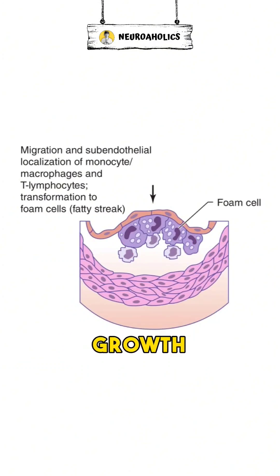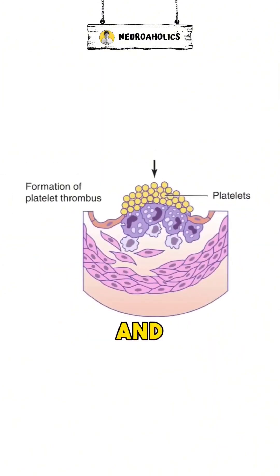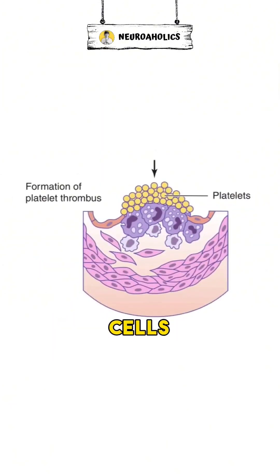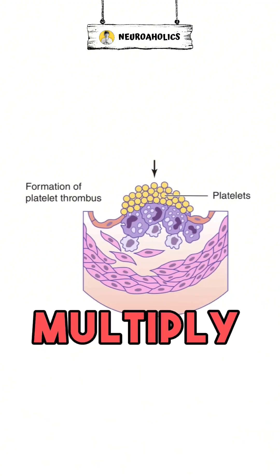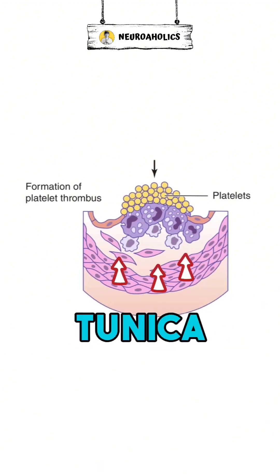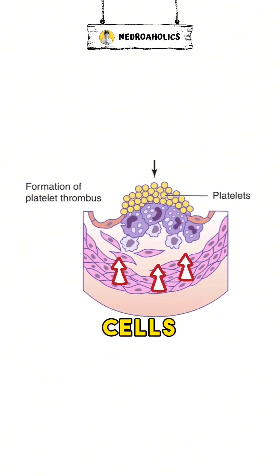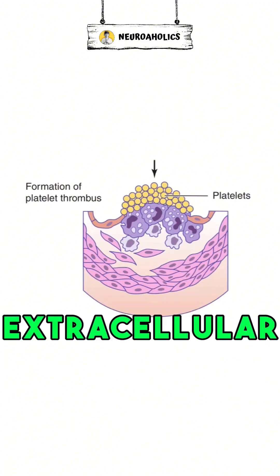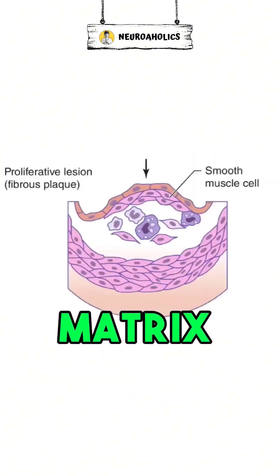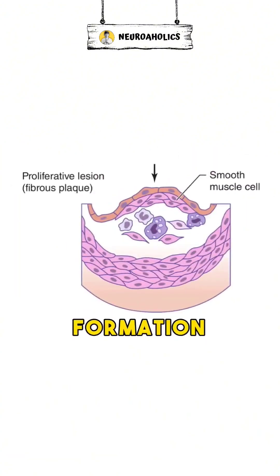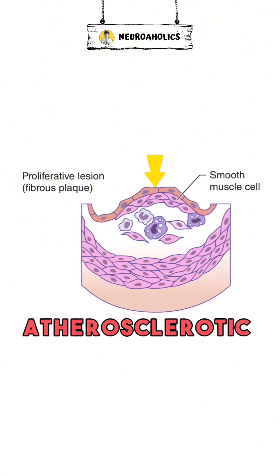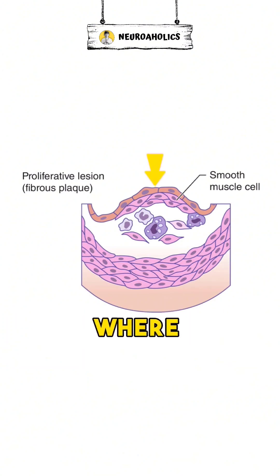At this time, growth factors and chemotactic factors released by endothelial cells and macrophages cause smooth muscle cells in the intima to multiply and move from the tunica media to the intima. These cells release parts of the extracellular matrix, which leads to the formation of a fibrous cap on top of the atherosclerotic plaque, where a dead core forms.